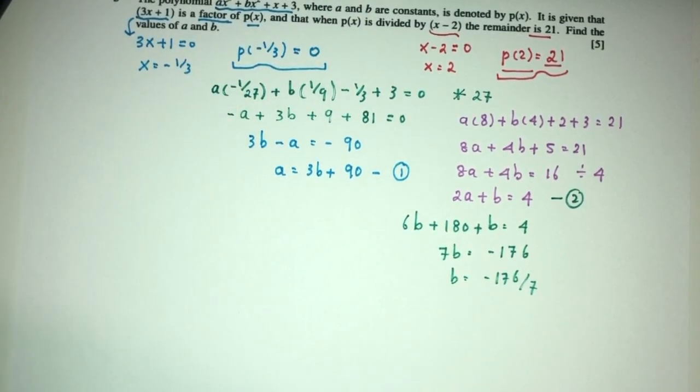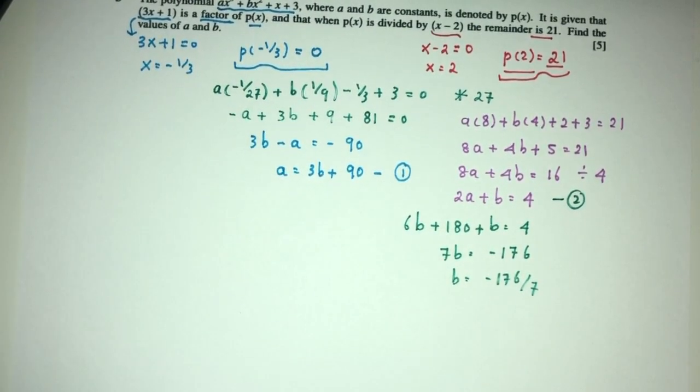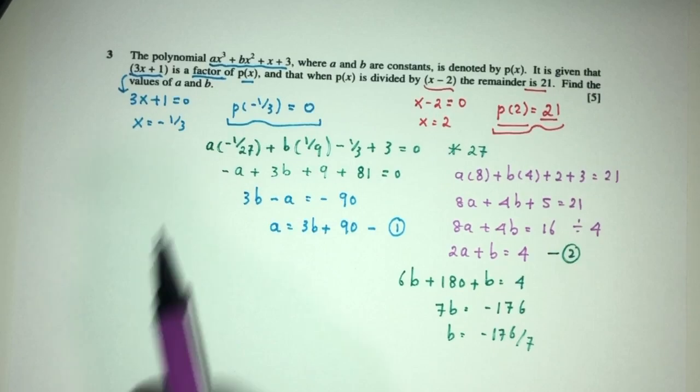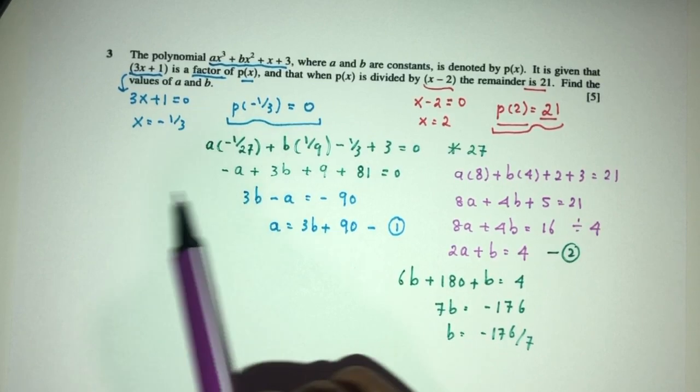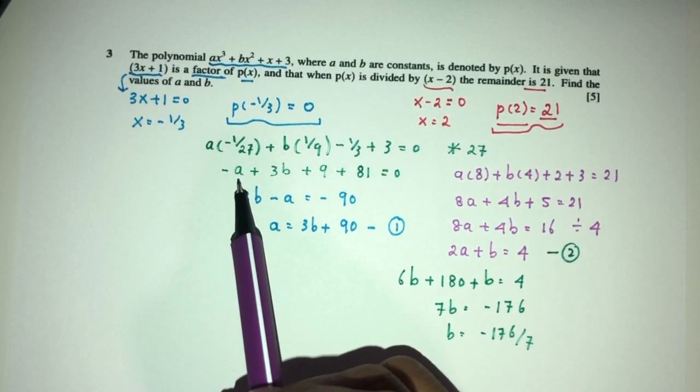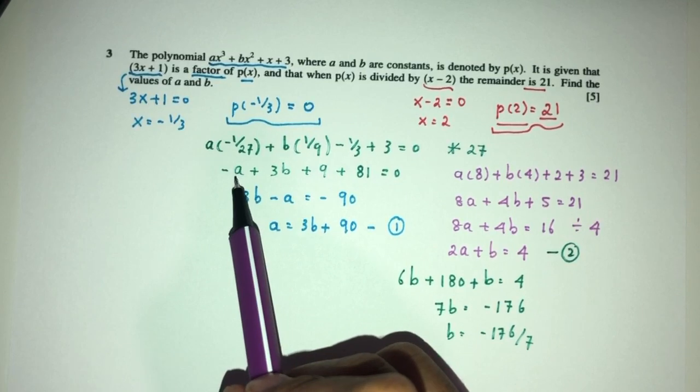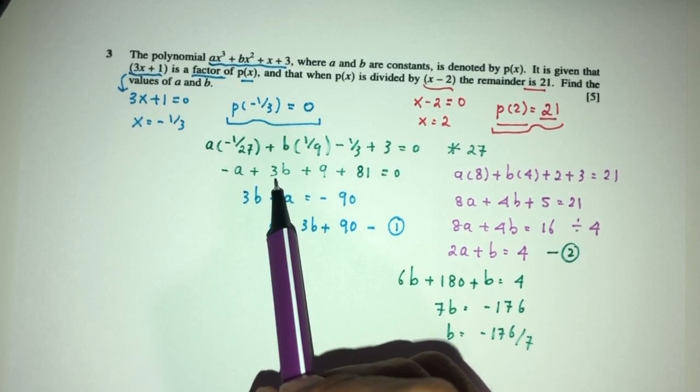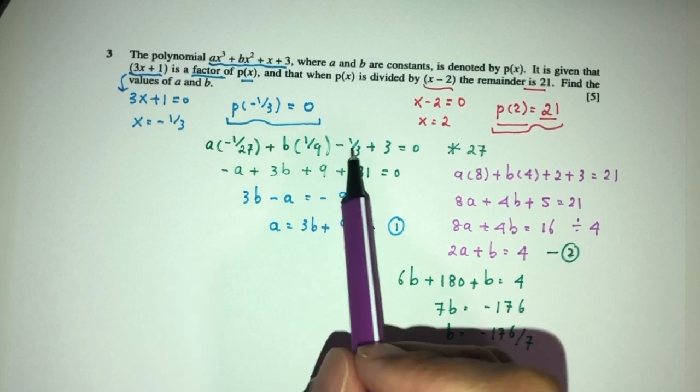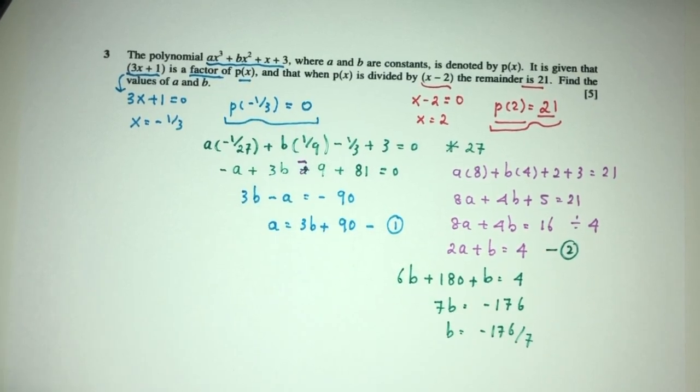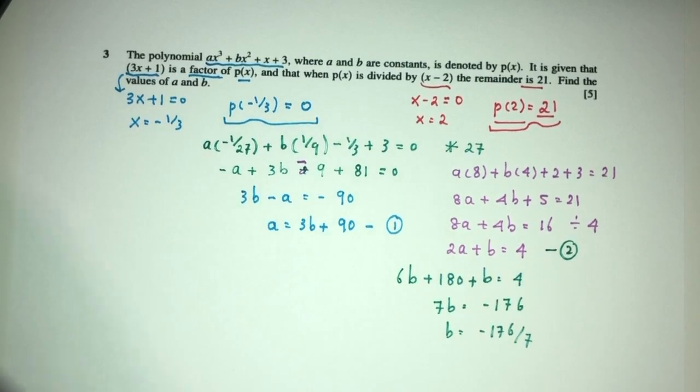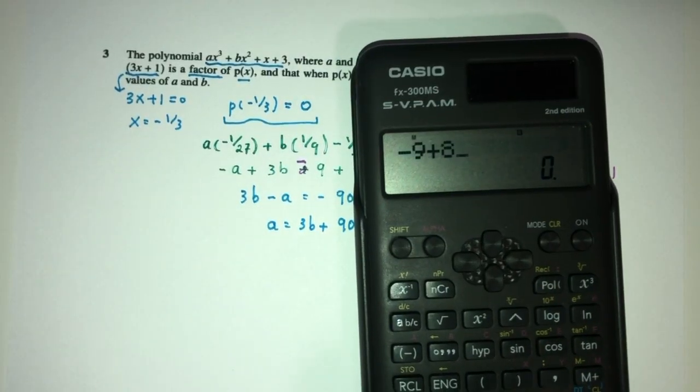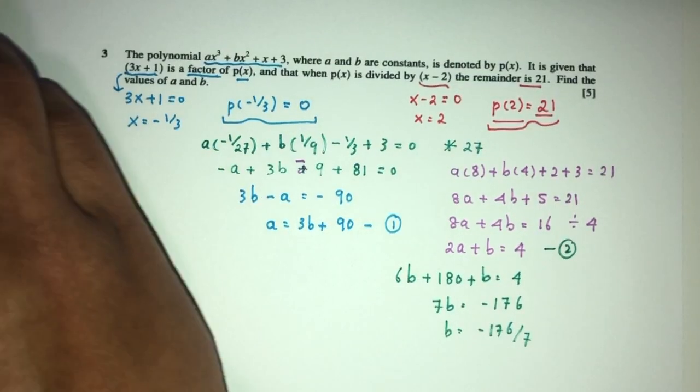This one seems to be okay. We have -8 here. 9 should be 3. Oh, here you go. It should be -9. As you can see, I made a mistake. It should be -9, so you have -9 + 81. That should be 72 instead of 90, so 72 over here.